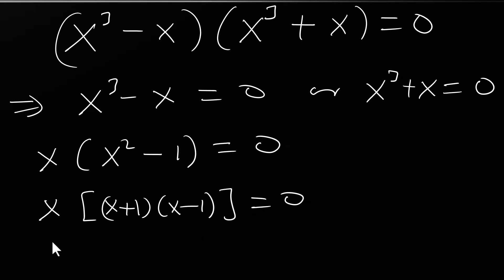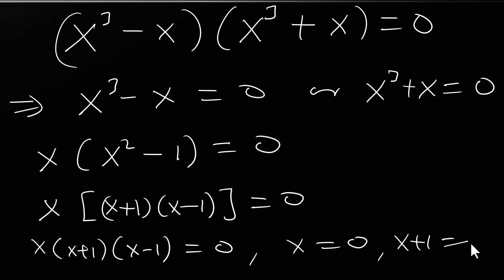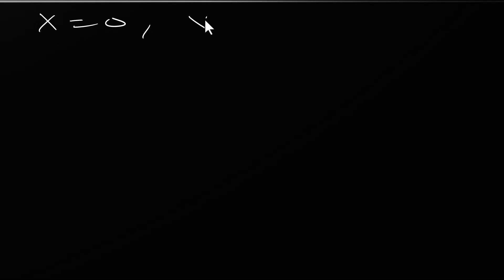So it means x(x plus 1)(x minus 1) equals zero. So x equals zero is the first answer, and from x plus 1 equals zero we get x equals minus one, and from x minus 1 equals zero we get x equals one.